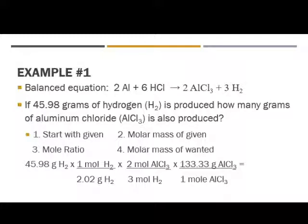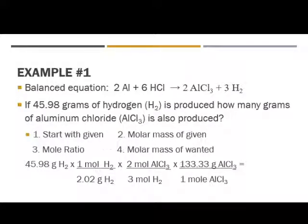I want to go all the way to grams of aluminum chloride. So I know that a lot of my ratios are going to have hydrogen and aluminum chloride in it. I'm going to start with my given: 45.98 grams of hydrogen. The first thing I need to do is convert that to moles. Remember, everything in a balanced equation is in moles — we cannot use grams, so we must first convert to moles. The way we convert to moles is through the molar mass. We've got to figure out the molar mass of hydrogen. Since we have grams of hydrogen and grams of aluminum chloride, we really are going to have to figure out the molar mass of both of them.